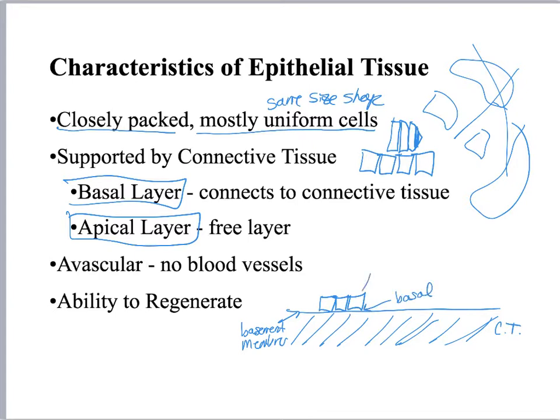The part that's against the basement membrane is called basal. The part up here that's free is called the apical. So this is the free edge. That's a really important characteristic: epithelial tissues always have a free edge and they are always attached to connective tissue on the other side.